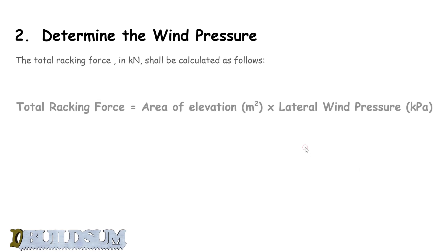The formula to work out wind pressure is done in kilonewtons. The total racking force equals the area of elevation in square meters times the lateral wind pressure in kilopascals, which is what we're going to work out now.